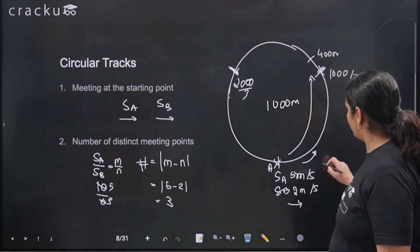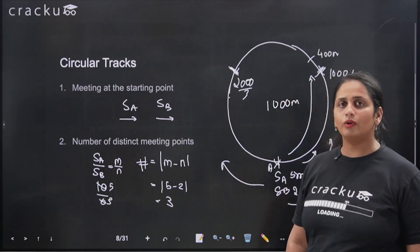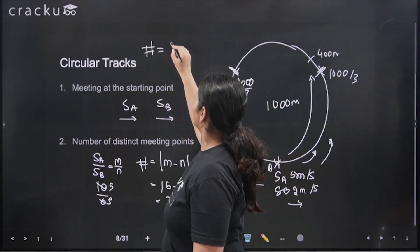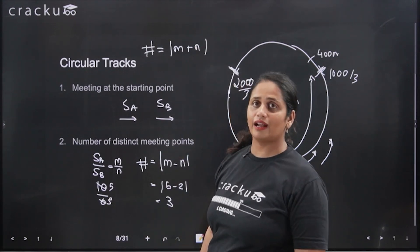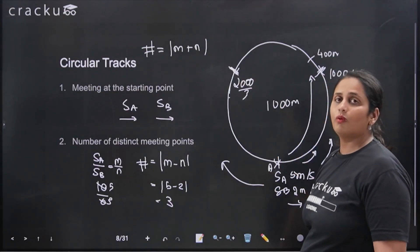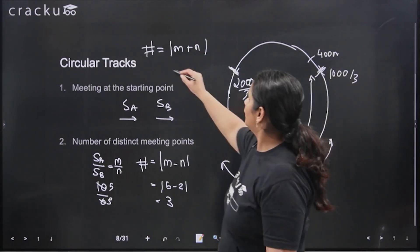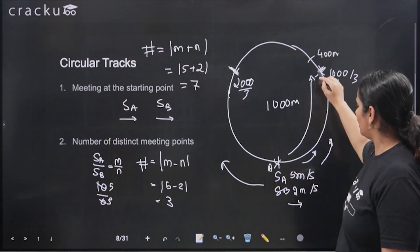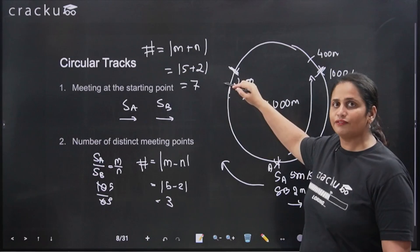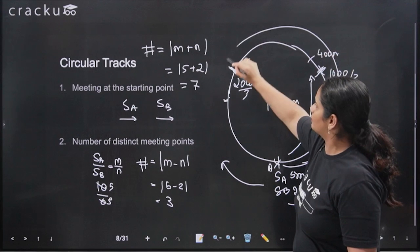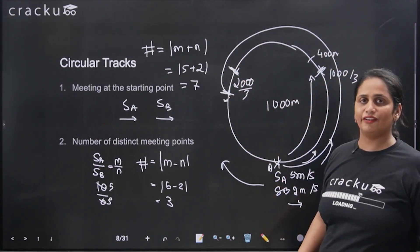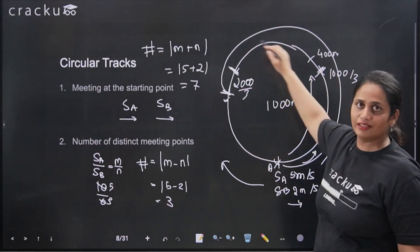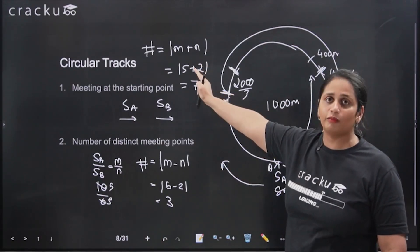Now suppose they are moving in opposite directions — A moving counter-clockwise and B moving clockwise. Do the same: find the ratio S_A/S_B and reduce to the lowest form M/N. But if they are running in opposite directions, the number of meeting points is M plus N. For example, if A runs at 5 meters per second counter-clockwise and B at 2 meters per second clockwise, the ratio is 5/2 in lowest form, so there are 5 + 2 = 7 meeting points. The first meeting point can be found: B covers 2/7 × 1000 = 2000/7 meters and A covers 5000/7 meters from the start. However, the seven meeting points need not appear in clockwise order — they can occur in any sequence around the track.